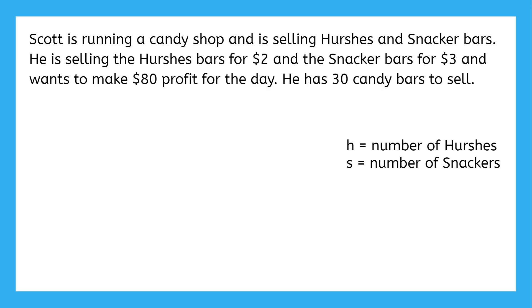Now that we know our variable, we can set up the equations. We'll start with the easy one. If he has 30 candy bars total, then that's the total amount of Hershey's and the amount of snackers put together.